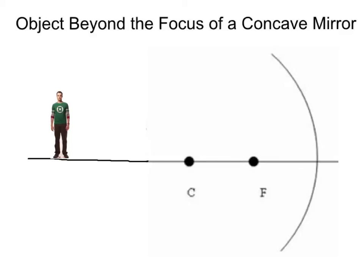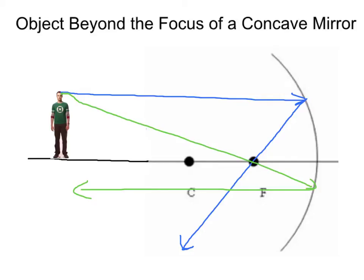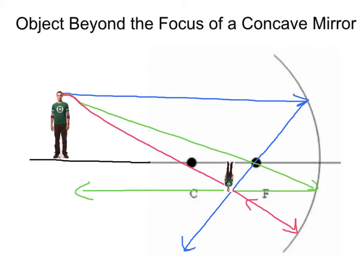Let's sketch a ray diagram for an object beyond the focus of a concave mirror, following the three rules. Rule one: a light ray parallel to the principal axis reflects through the focus. Rule two: a light ray from the top of the object through the focus reflects parallel to the principal axis. Rule three: a ray from the object through the center reflects right back along itself. The image is formed where these reflected rays meet — Sheldon is inverted and smaller, and it is a real image because these are where light rays really do converge.